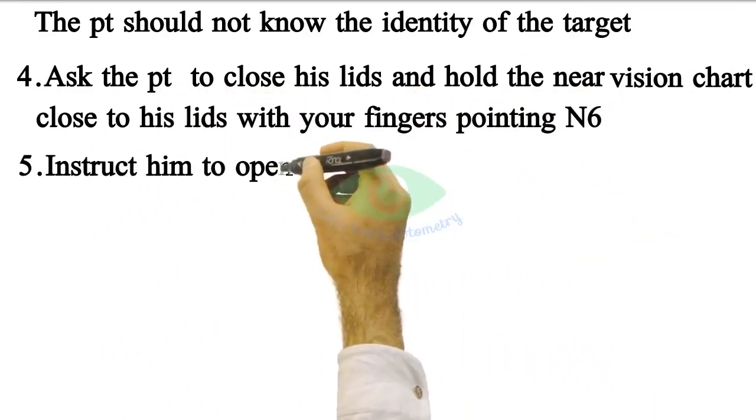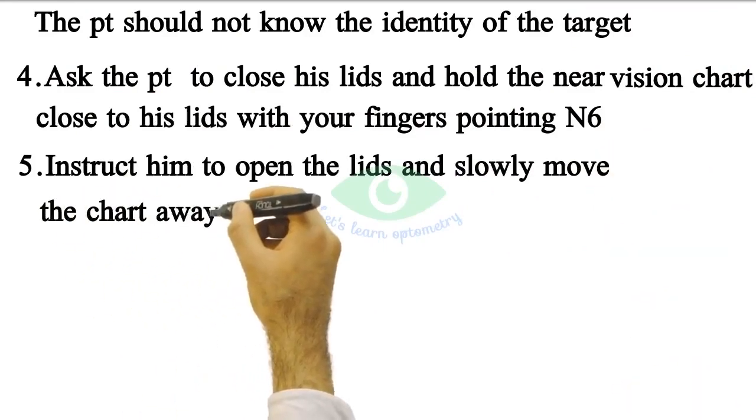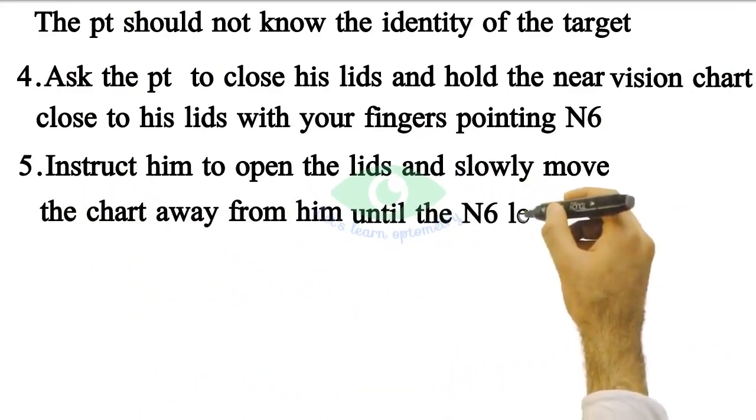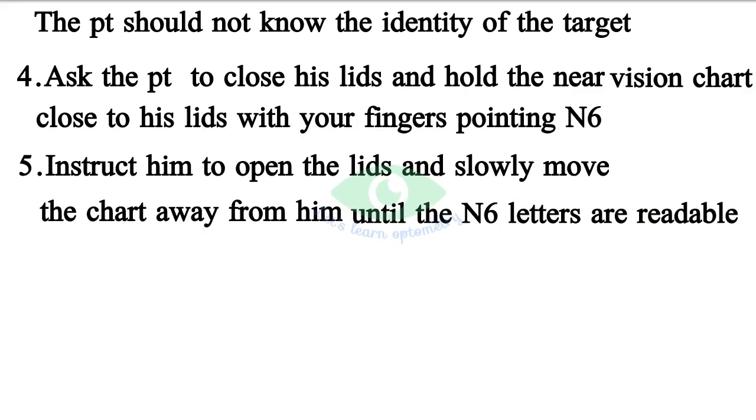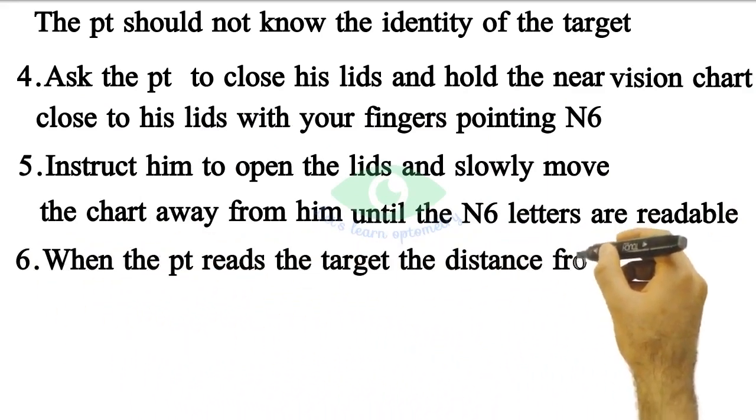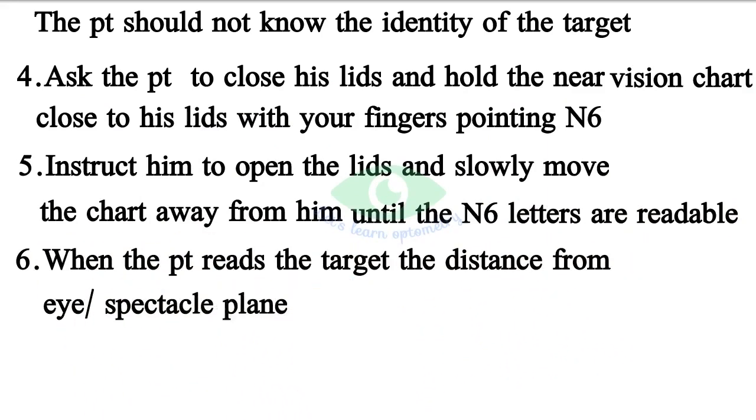Now instruct him to open the lips and slowly move the chart away from him until the N6 letters are readable. When the patient reads the target, the distance from the eye or spectacle plane to the chart is measured and converted into diopters.